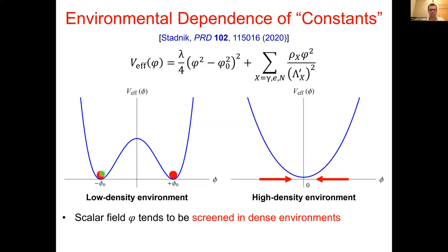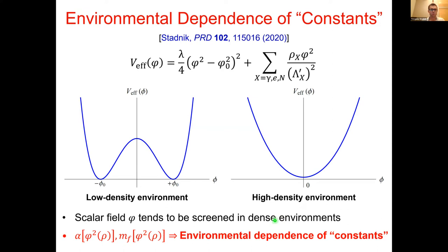Starting in a low-density environment where the scalar field prefers one of the two minimum states, when we go into a high-density environment, the scalar field phi tends to be pushed toward a smaller value — in other words, the scalar field phi would be screened in a dense environment. Consequently, the apparent values of the physical constants depend on the local value of phi squared, which in turn depends on the local matter density, resulting in an environmental dependence of the physical constants.